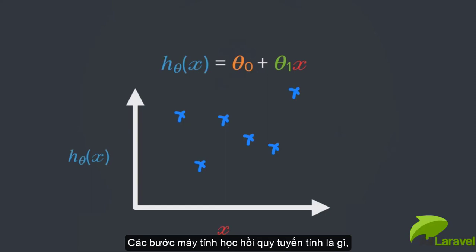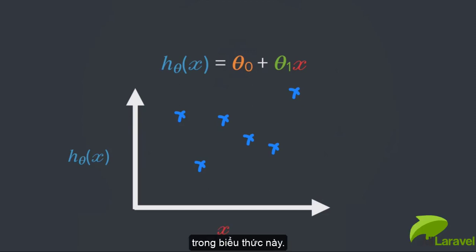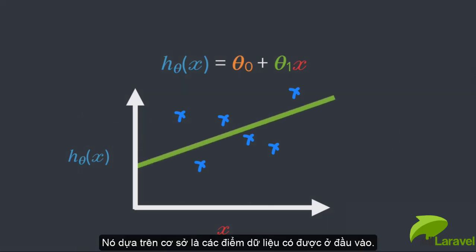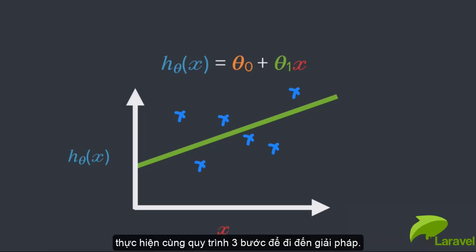In a very simple linear regression example, our machine learning program has had to learn the orange theta 0 and the green theta 1 parameters in this equation. And that's going to be on the basis of the data points that it was given. So you can keep this example in mind in what I'm about to describe to you. But this framework that we're going to talk about goes well beyond regression. And that's because many, many machine learning techniques follow pretty much the same three-step process to arrive at their solution. And here it is.